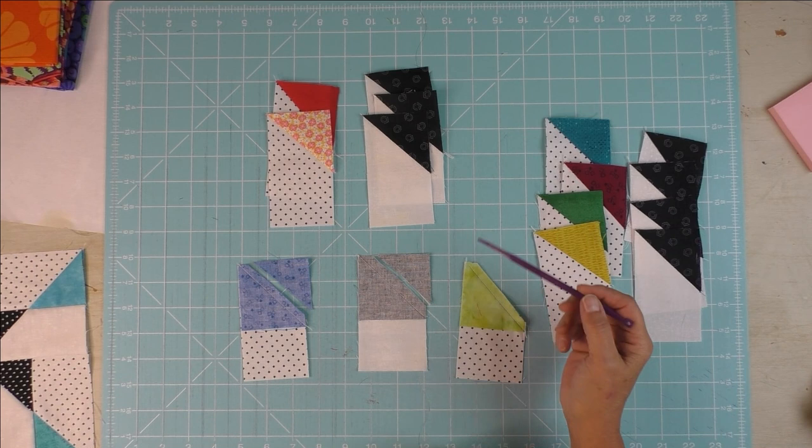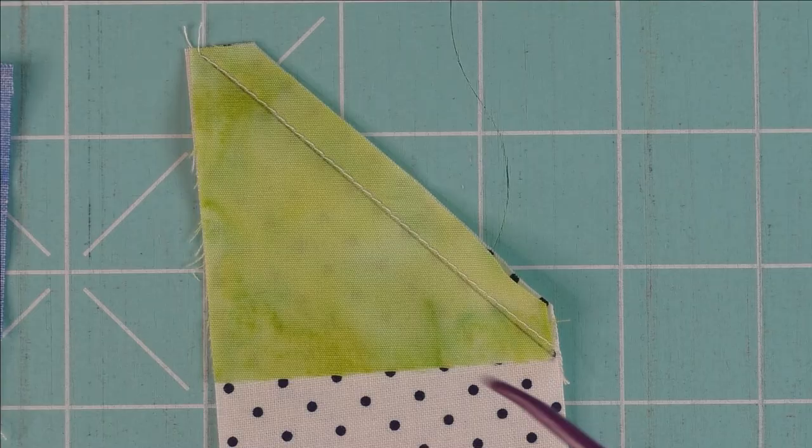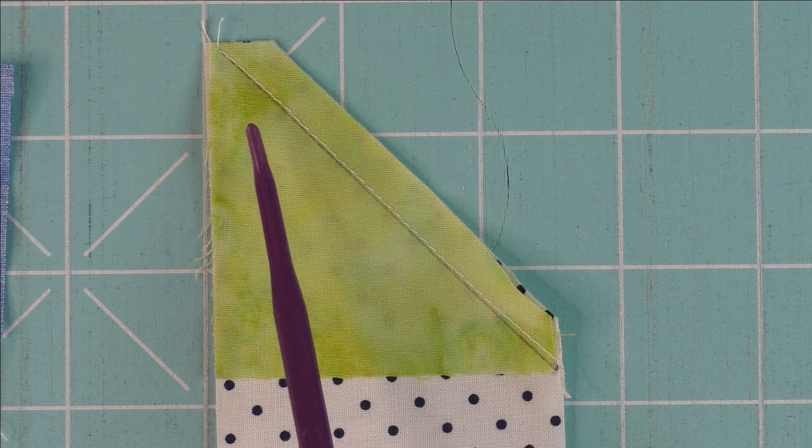You press toward the dark fabric. Here are the pieces for the rotary cut quilt and they're virtually the same. You can intermix these if you needed to.